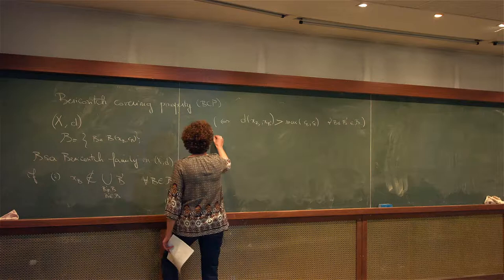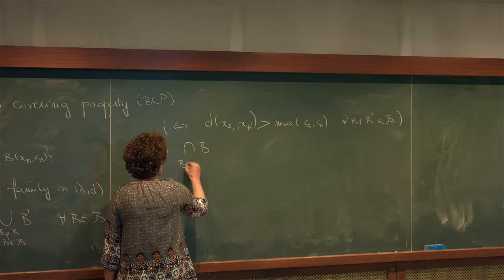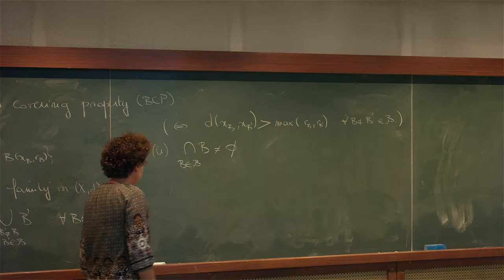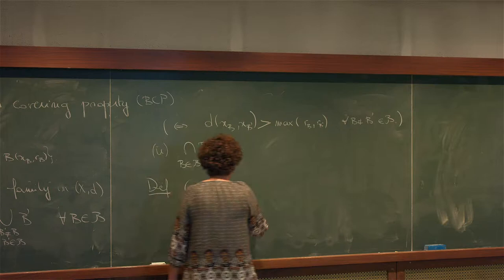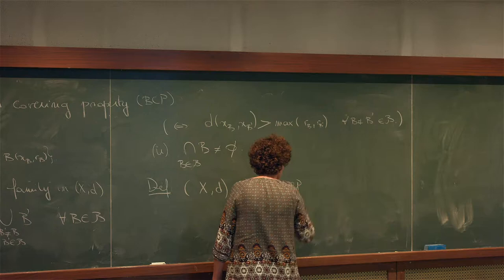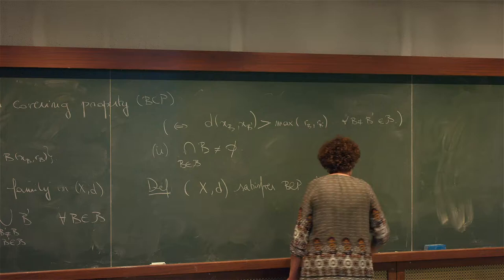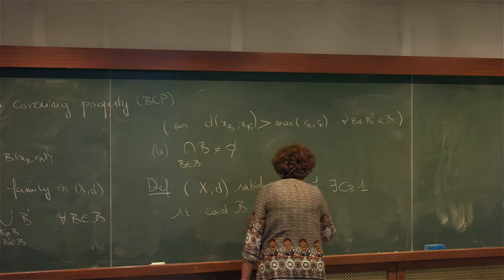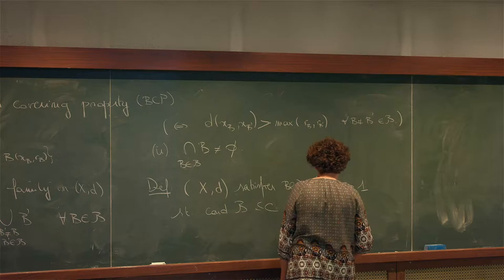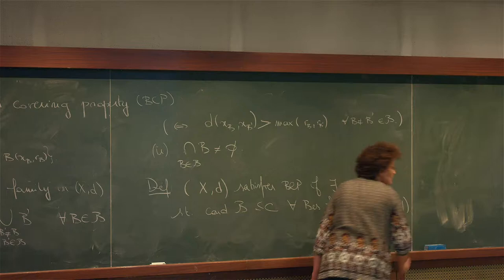The second condition is that the intersection of all balls in the family is non-empty. Now, what is the Besicovitch Covering Property? I say that my metric space satisfies BCP if there exists a constant C, positive and bigger than one, such that the cardinality of B is less than C for every Besicovitch family B in my metric space.